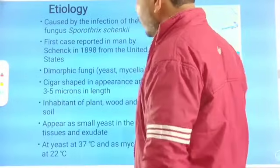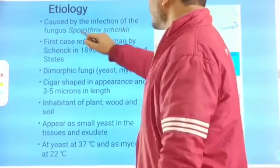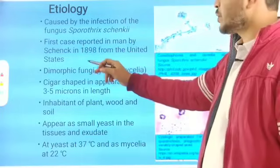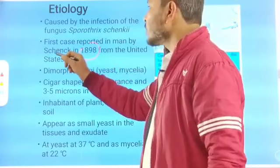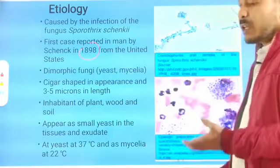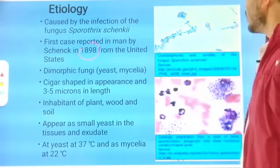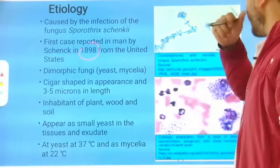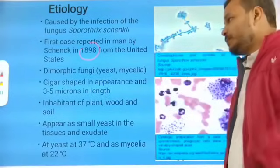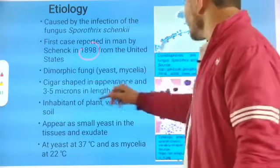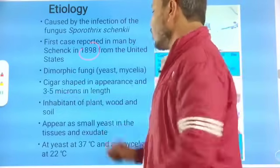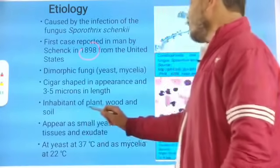Regarding etiology, Sporotrichosis is caused by the fungi Sporothrix schenckii. The first case was reported in man by Schenck in 1898, and on his name 'schenckii' was given. Under the microscope with lactophenol cotton blue, it appears dimorphic — present in two forms: yeast and mold. In the yeast form, the fungi are cigar-shaped, 3 to 5 microns in length.